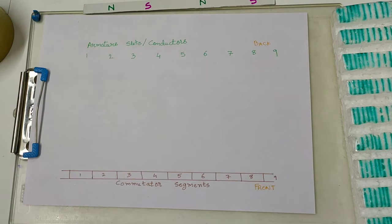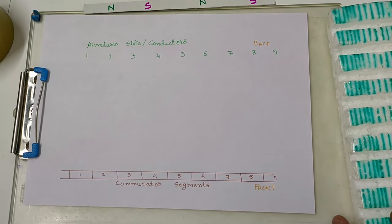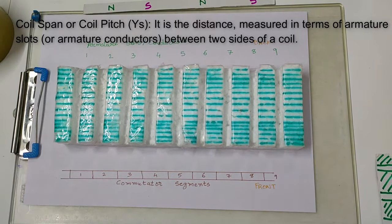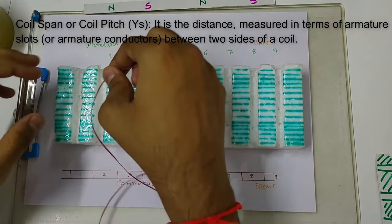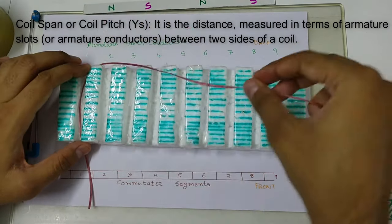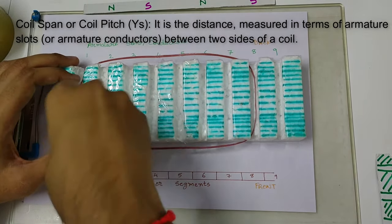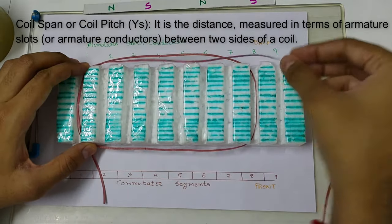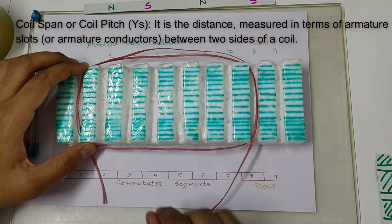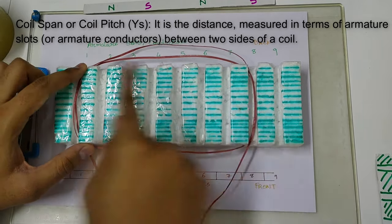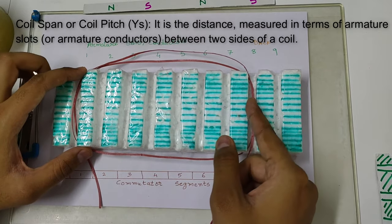This is all about pole pitch. Now, coil pitch or coil span is defined as the distance between two sides of a coil in terms of armature conductors. That is, if I am starting the coil from slot number 1 and going till slot number 8, then these are the two sides of the coil starting from 1 to 8. So the coil pitch or coil span in terms of armature conductors is 1, 2, 3, 4, 5, 6, 7, 8.